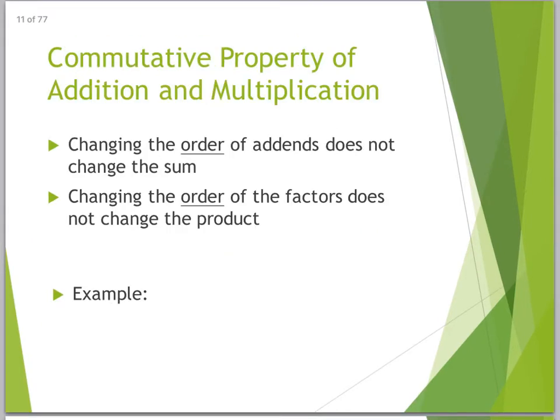Here we have the commutative property of addition and multiplication. Commute means to move, like I commute back and forth to work, right? Which I do, I drive from Fremont to Bellevue. So things commute, they move around. What this says is changing the order of addends does not change the sum. Changing the order of factors does not change the product. For instance, 2 plus 3 is the same as 3 plus 2.